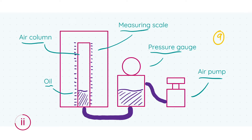For this part there were nine marks available. The breakdown is: three marks for showing a means of measuring pressure, which is your pressure gauge; three marks for showing a means of measuring volume, which is your air column and measuring scale; and a final three marks for a means of changing pressure or volume, which in our case was the air pump.